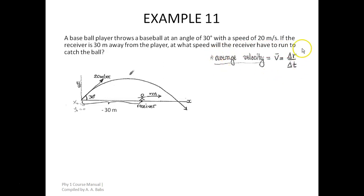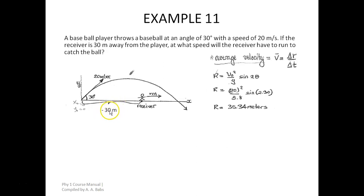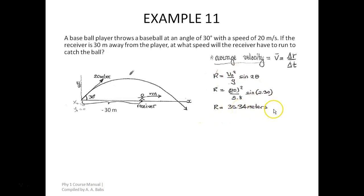The horizontal range for projectile motion is given by R equals v₀² divided by g, times sin(2θ). Here v₀ is 20 m/s, g is 9.8 m/s², and θ is 30 degrees. Note: disregard the negative sign shown earlier — the distance is simply 30 meters. Plugging in all values gives R equal to 35.34 meters. This means the baseball will cover a horizontal range of 35.34 meters.